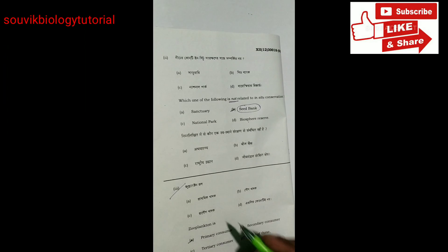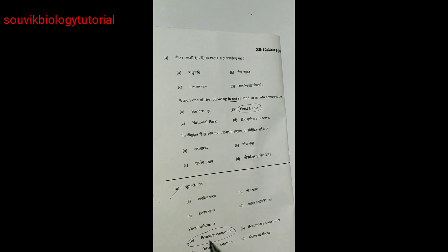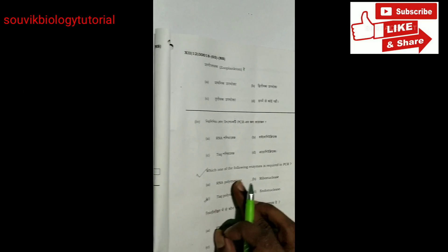Next question. Zooplankton is primary consumer obviously. Phytoplankton is producer and zooplankton is primary consumer. Next question.